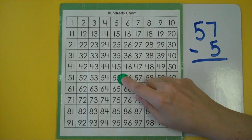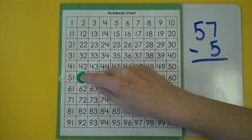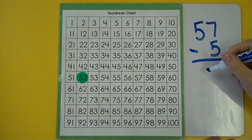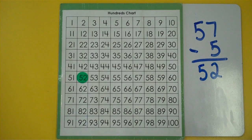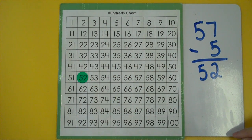Well let's start at 57. I ate 1, I ate 2, I ate 3, I ate 4, I ate 5. I have 52 french fries left. I went left because I was getting smaller.